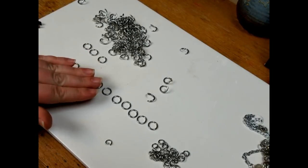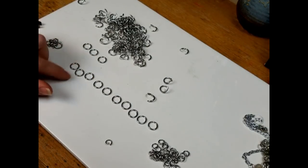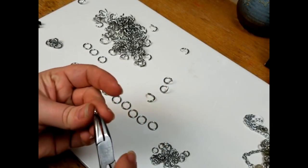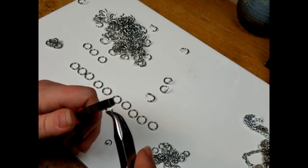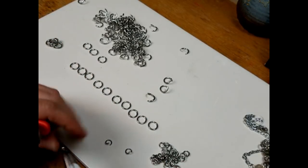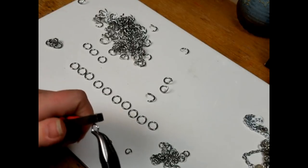What we'll do is we're going to start with having quite a few of the 16 gauge 5 sixteenths rings closed, and then quite a few of the 18 gauge 3 sixteenths open. From here, just for simplicity's sake, I am going to call these the large rings and these the small rings.